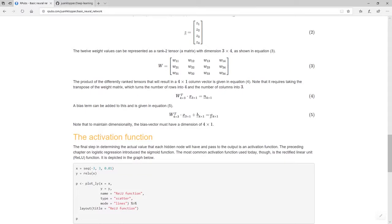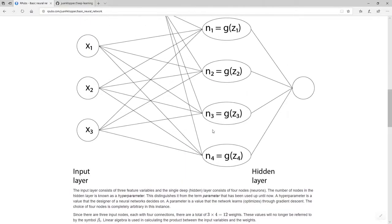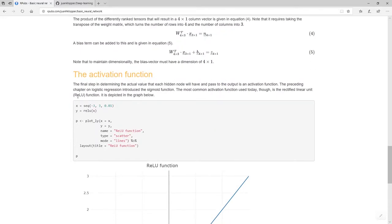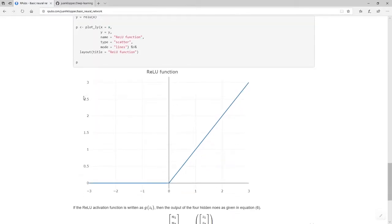Now, I need to apply to each of these values, Z1 through Z4, I've got to apply an activation function. Here we call it G. Now, there are many. You've seen the logistic sigmoid function. One of the most common activation functions, though, is the ReLU function, rectified linear unit. You see certain R, and then lowercase E, and then uppercase LU. And this is what it looks like.